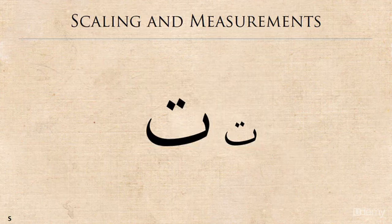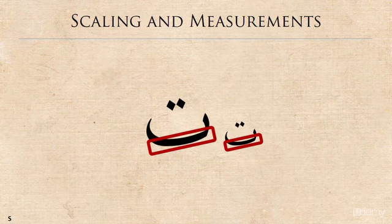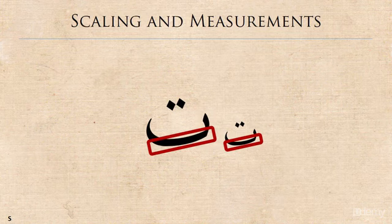The second difference is the difference in the thickness of the strokes between the two letters. So the strokes in the smaller Tha are thinner and the strokes in the larger Tha are thicker.